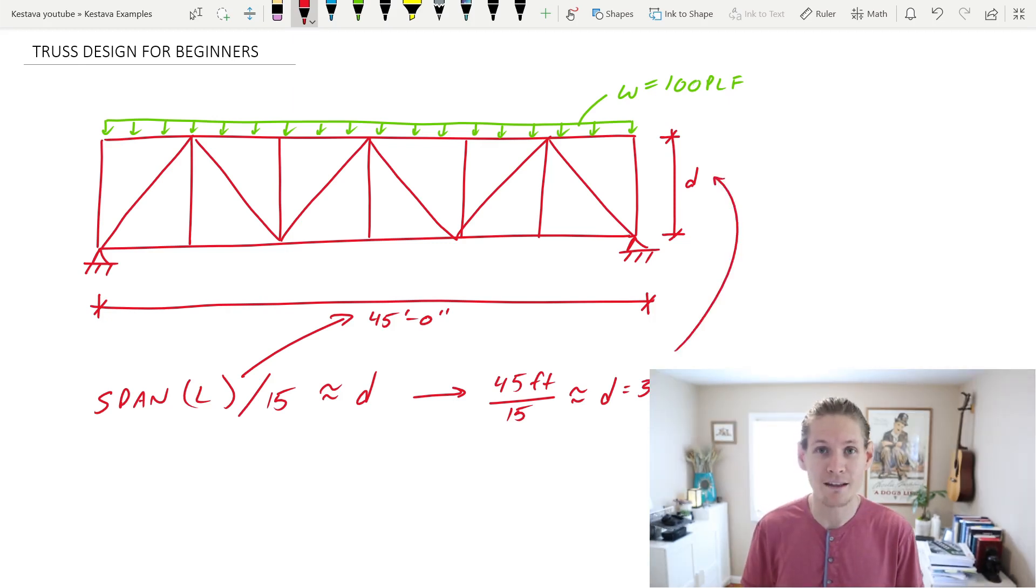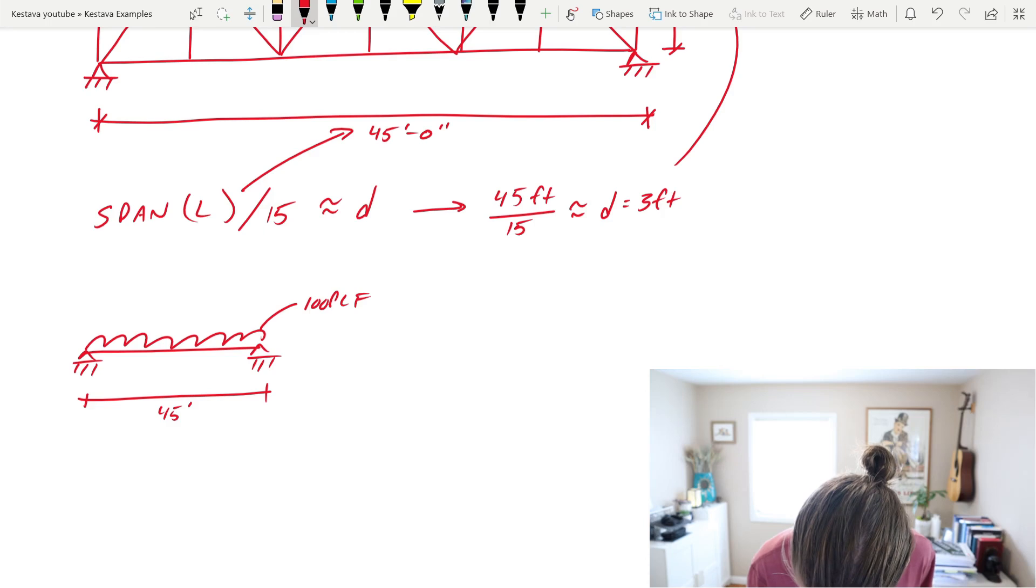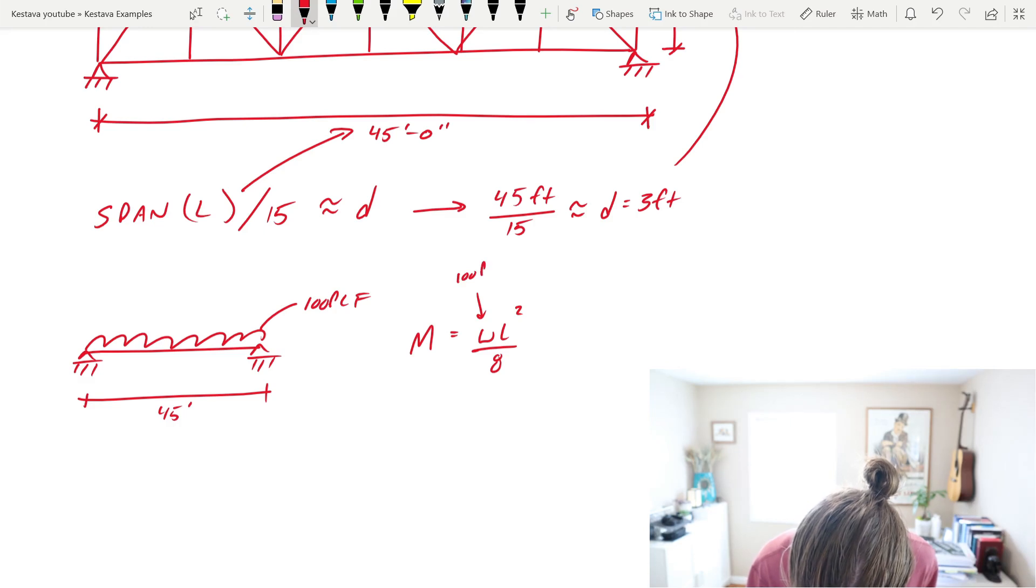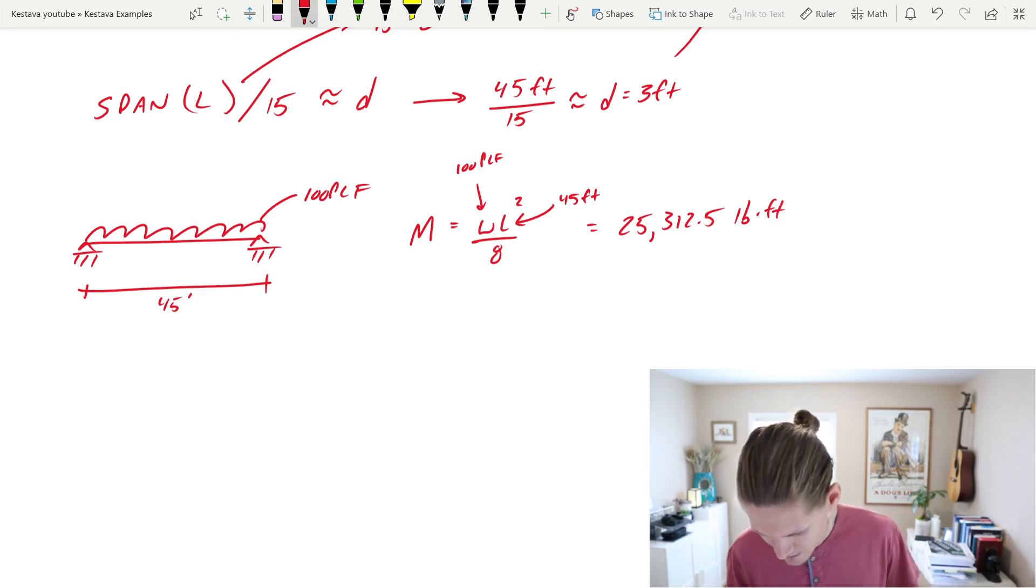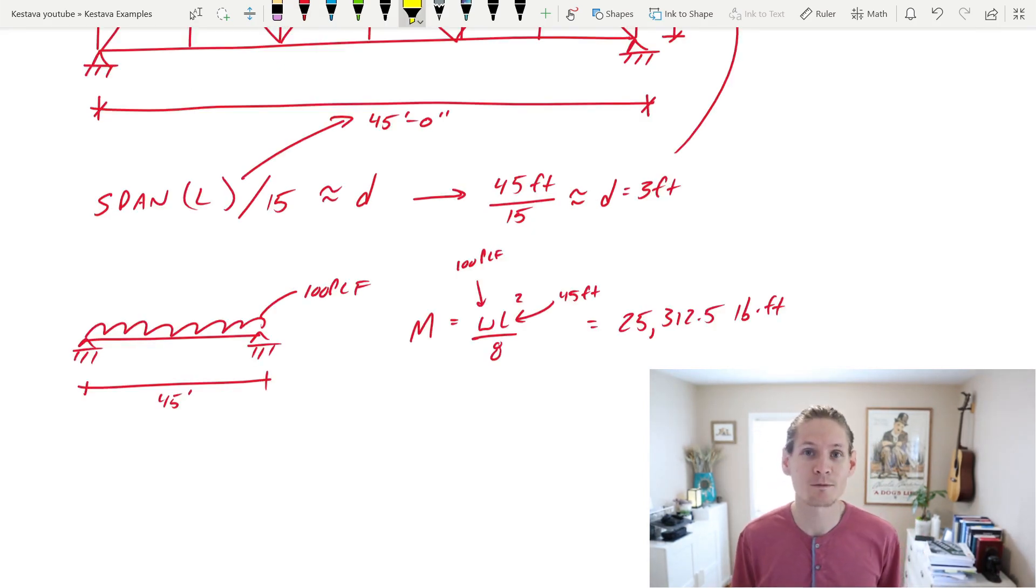We can now find the bending moment in our truss. This is not assuming LRFD or ASD or anything like that, this is just pure simplified equations to start with. You can find the moment, the max bending moment in your truss, M equal to the equation WL² over 8. W being 100 PLF, L being 45 feet, which gets you 25,312.5 pound-feet. Watch your units here. We use PLF and feet, so that's going to give us pound-feet.